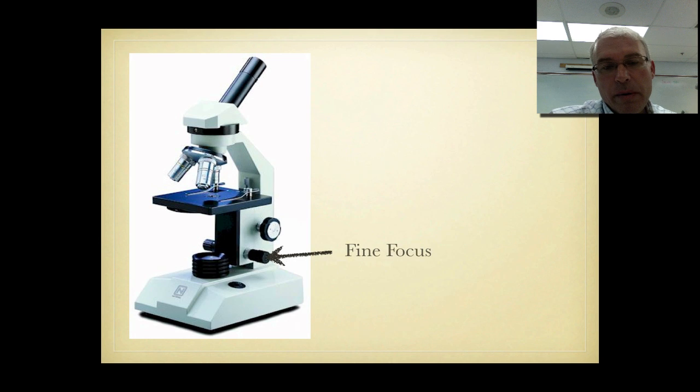And finally we have the knobs that we use to focus. The coarse focus which is the large knob and the fine focus which is the small knob. You use the coarse focus on low power only because it moves the stage up and down fast. You've got to be careful focusing because you don't want to push your objective lens through your slide and break the glass.